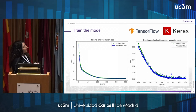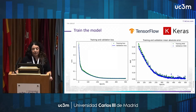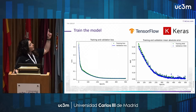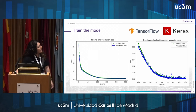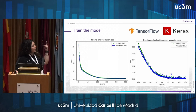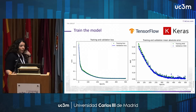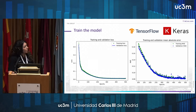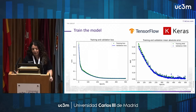In this graph, we can see the results of the training process. We see the losses and the mean absolute error. By analyzing this graph, it is possible to discover what went wrong during the training process.